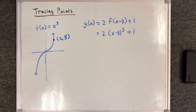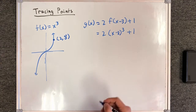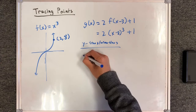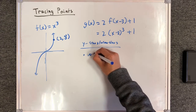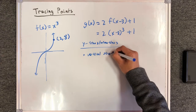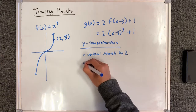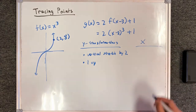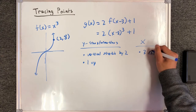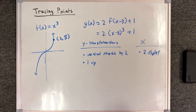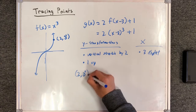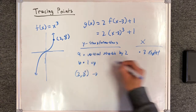This time I'm not going to graph it — we'll just trace the point. So let's identify all the transformations here. For the y transformations, we have 2 of them. The first one is going to be vertical stretch by a factor of 2, and then we will move it 1 unit upwards. For the x transformations, the only one is 3 units to the right. So it doesn't really matter which order we do the x and y transformations, because they're independent of each other. So let's do y transformations first. Let's call them a, b, and c.